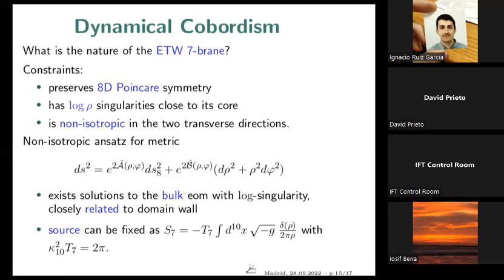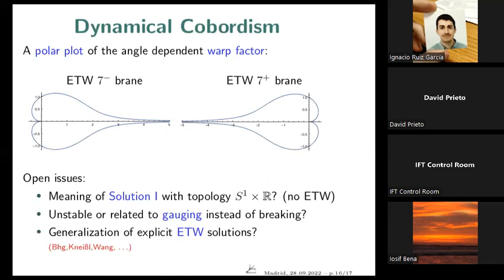Making this non-isotropic ansatz and substituting into the equations of motion, we found that a solution exists — precisely a log singularity. This was very convincing: we have an intrinsic description of this end-of-the-world brane, and by matching with the delta source we could fix its tension. In Einstein frame the tension is constant — no scaling with the dilaton — which means in string frame it scales like e^{-2φ}, like a closed string. Looking at a polar plot of the warp factor, one solution looks like a brane with space completely disappearing in one direction and a non-trivial profile in all other angular directions. The matching gives the same scaling behavior factor δ close to the brane — a perfect match.